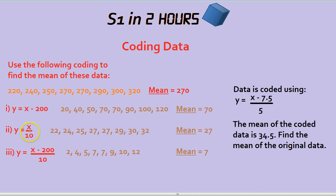What about this coding here, x divided by 10? Don't worry about the y, that's just your answer. x divided by 10. Well, if we divide each of these by 10, 220 divided by 10 is 22, 240 divided by 10 is 24, etc. And if we find the mean of this data, we'd find it's 27.